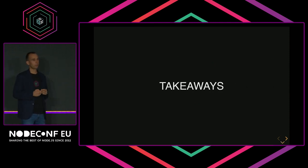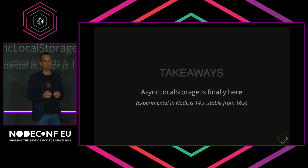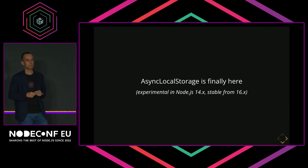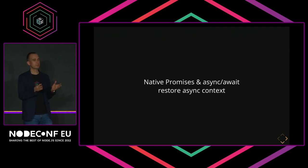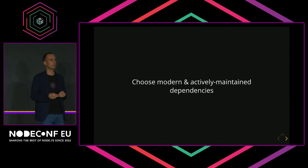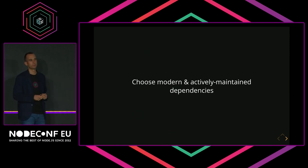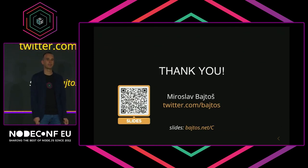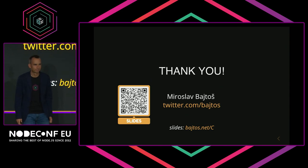That's all. I'd like you to remember three takeaways from my talk. First, Async Local Storage is finally here after so many years in the making — it's stable and supported by Node.js LTS versions. Second, if you are using Promises and Async/Await, then you are fine and don't need to worry about anything. And finally, please choose modern and actively maintained dependencies so that you don't end up with the Q module deep in your dependency tree, losing your context. Thank you for your attention.